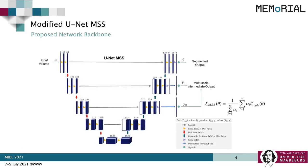Here we propose a modified UNET multiscale supervision model where the loss is calculated not only on the final output of the model, but also on two outputs of the internal layers. These additional outputs are first supplied to fully connected convolution layers, and then interpolated to have the same size as the final output. All three outputs are used for loss calculation, and a weighted sum of those losses is used as the final loss value, which is then backpropagated.